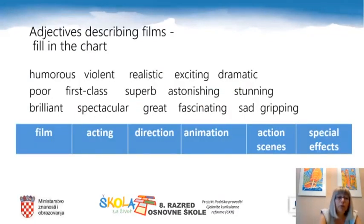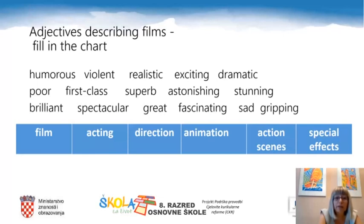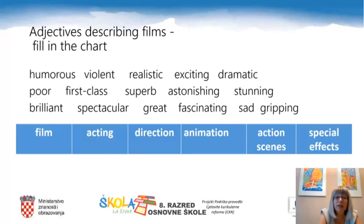We have come to the fourth part of our mind map: adjectives describing films. This chart consists of six columns: film, acting, direction, animation, action scenes, and special effects. There are adjectives: humorous, violent, realistic, exciting, dramatic, poor, first-class, superb, astonishing, stunning, brilliant, spectacular, great, fascinating, sad, and gripping. Draw the chart in your notebook, please, and think about which of these adjectives you would use to describe a film, acting, direction, animation, action scenes, and special effects.